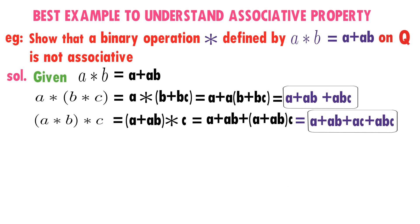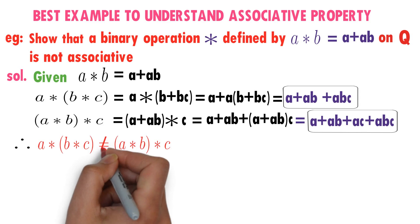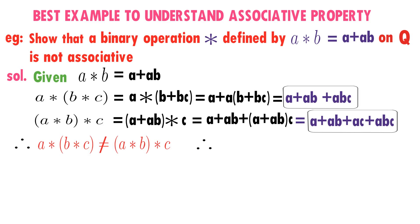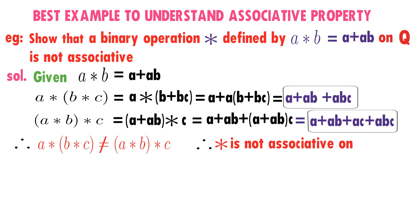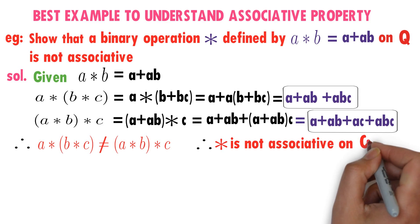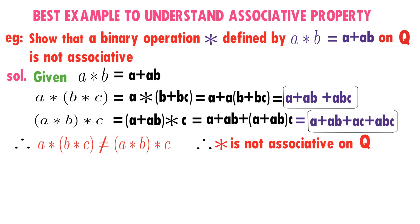Are they different or same? It seems they are different. Are they different for any three elements a, b, c? For the time being, you can see that a★(b★c) is not equal to (a★b)★c, so we say that star is not associative on the set of rational numbers.